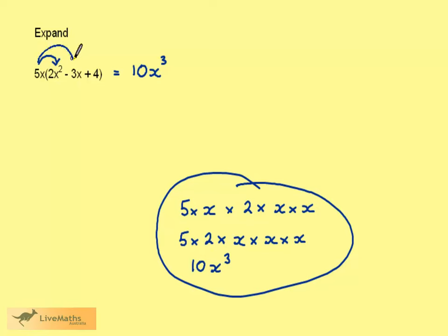In a similar way, 5x times minus 3x, 5 times minus 3 is minus 15, and the x times x gives us x squared.